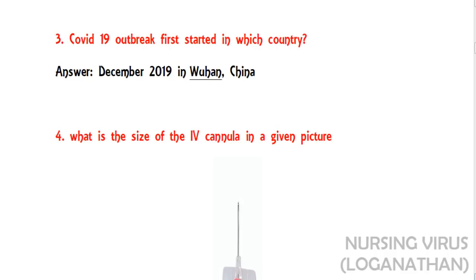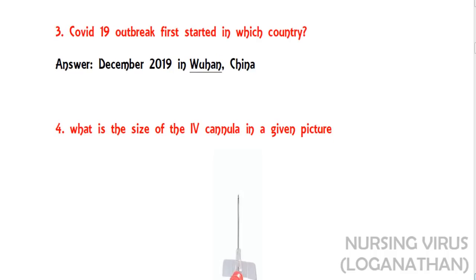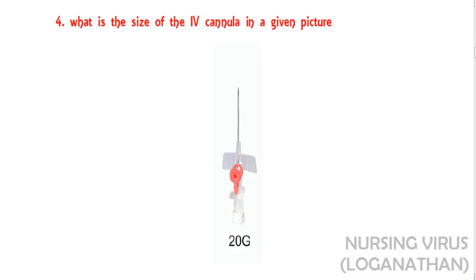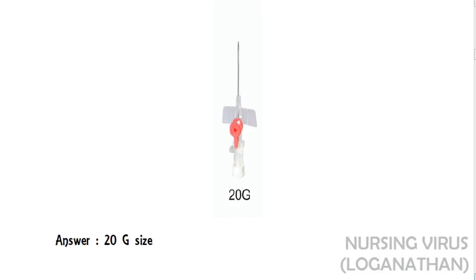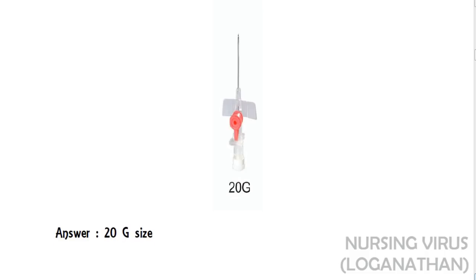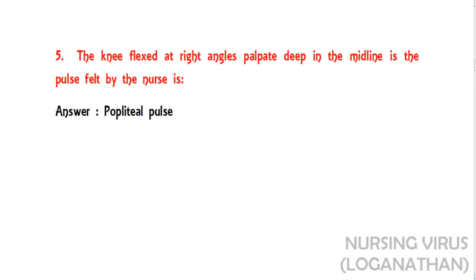The fourth question: what is the size of the IV cannula in the given picture? They showed a pink color IV cannula — the answer is 20 gauge. This is a commonly used IV cannula for adolescence and adulthood.